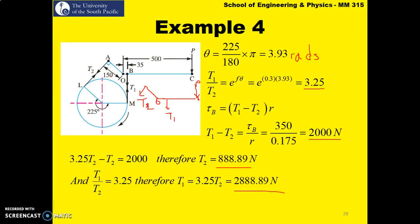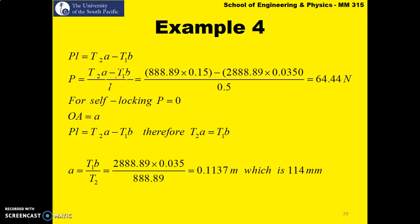So substitute value of T₂ and T₁. The distance A is OA. T₂ is acting at a distance OA from O, whereas T₁ is acting at a distance OB from O. So these are the respective distances. OA is 150 and OB is 35. So this is the distance that I have put in over here. So you get your force to be 64.44 N.